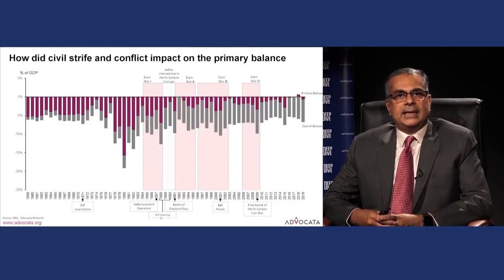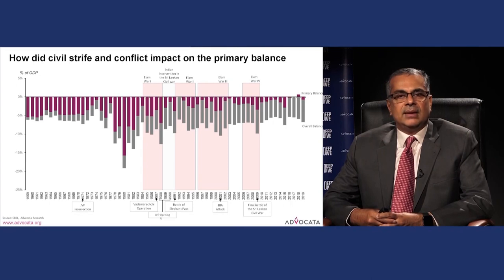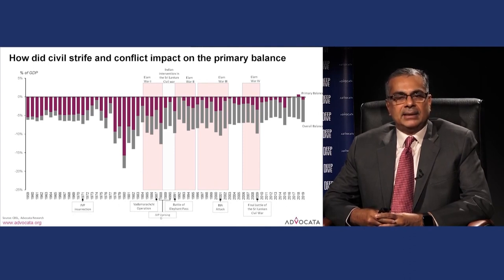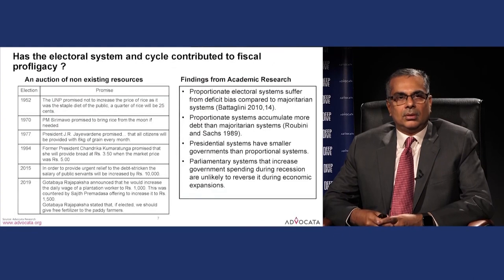Overlaying the same data against periods of civil conflict — the JVP insurrections and the various Eelam wars over a period of 20 years — there is a clear pattern that fiscal balances did blow out during specific periods when conflict activity magnified.